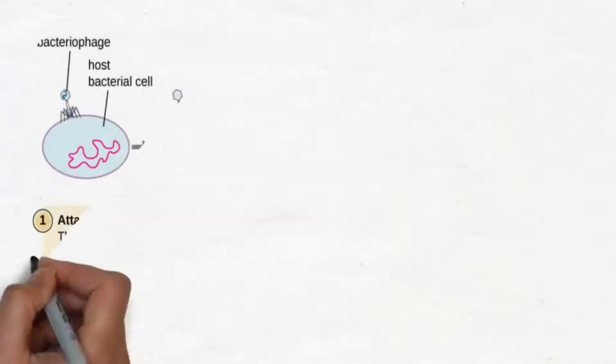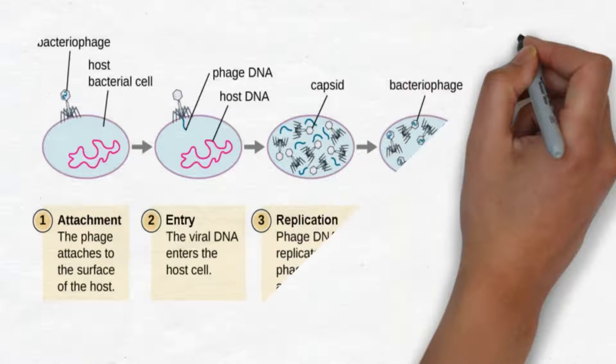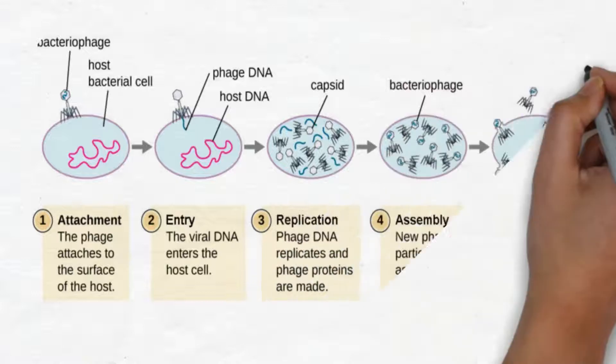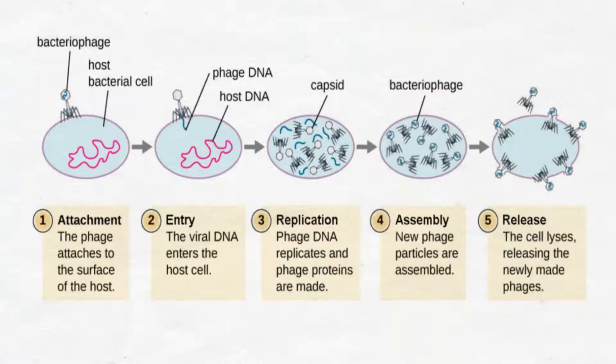As we can see here, there are five stages in the viral infection process. First, the attachment — the phage attaches to the surface of the host. Then the entry — the viral DNA enters the host. The replication — phage DNA replicates and phage proteins are made. Then new phage particles are assembled. And finally, the release — the cell lyses, releasing the newly made phages.